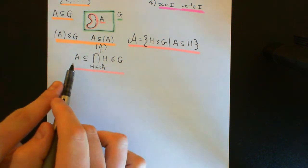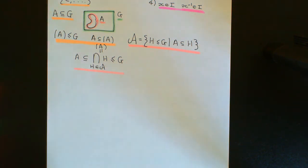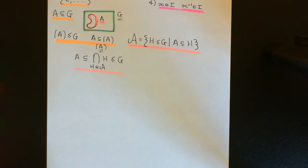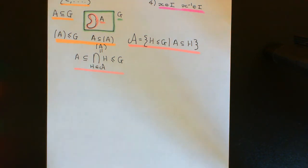It will still contain the subset A because all the things that we've intersected together contain the subset A. And it's going to be the smallest subgroup in G that contains the subset A, because all other subgroups of G that contain the subset A will contain this intersection — this subgroup generated by A.